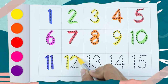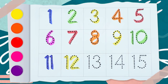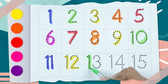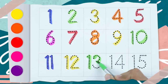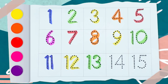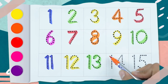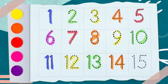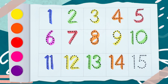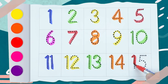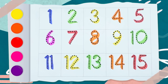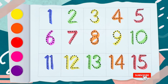Number 11 is yellow color. Number 12 is yellow color. Number 13 with green color — 1, 3, 13. Number 14 is orange color. And 15 is red color. Thank you so much!